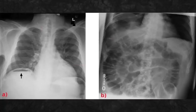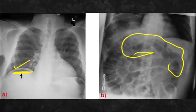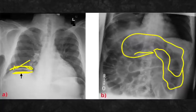Gas under the diaphragm was asked. You can see the jejunum loops and the obstruction. This X-ray showing gas under diaphragm indicates perforation, and this X-ray was asked.